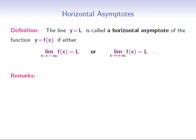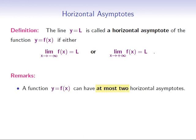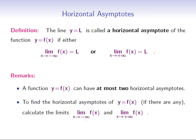So we conclude the following: a function f can have at most two horizontal asymptotes. To find the horizontal asymptotes of a given function f, calculate the limits of f both at positive and negative infinity. If we obtain a number, it means that there is a horizontal asymptote. Let's have a look at the following example.